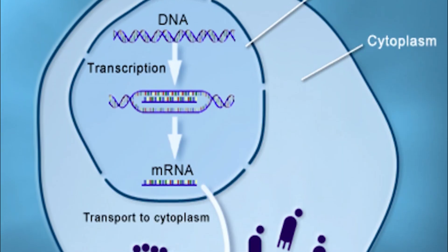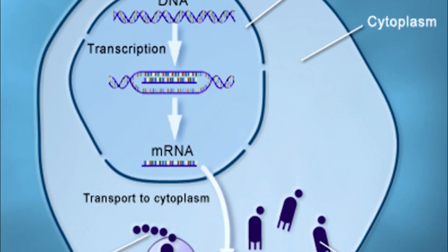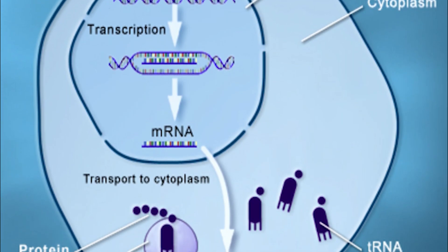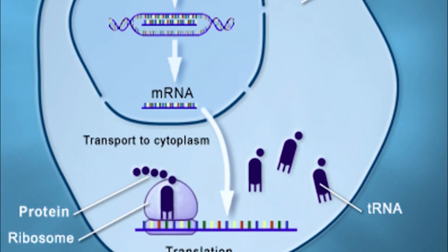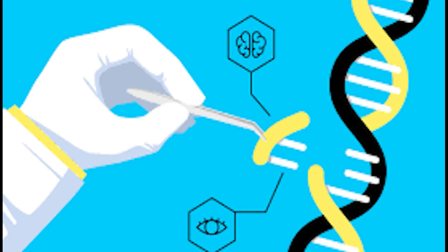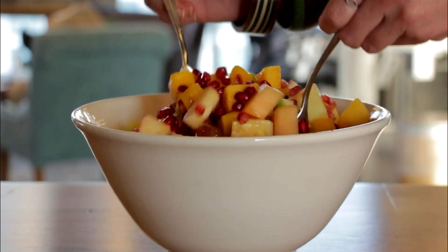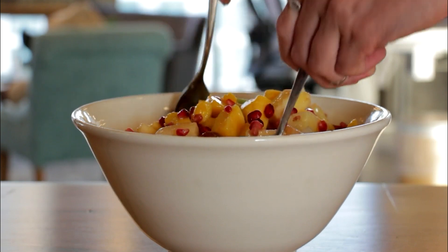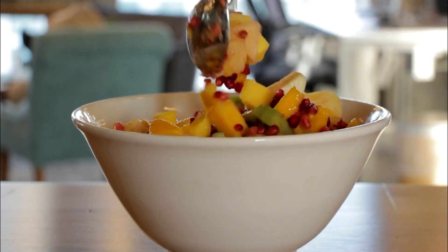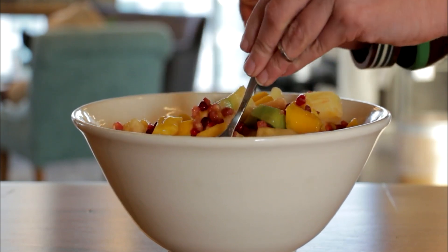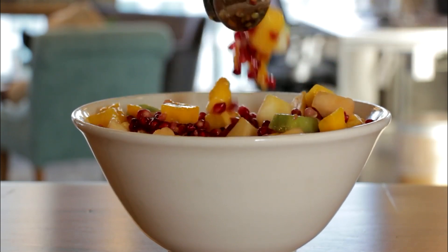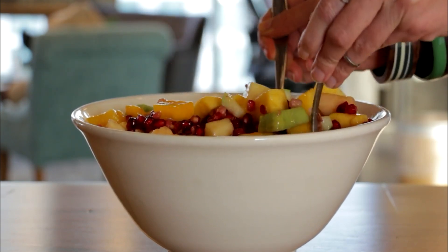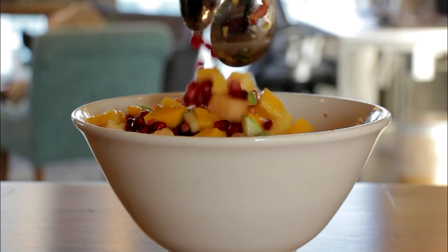It is important to note that while genes provide the instructions for making proteins, they are not the only factor that determines an individual's traits. Environmental factors, such as diet and upbringing, also play a role in shaping an individual's characteristics.